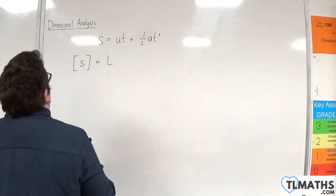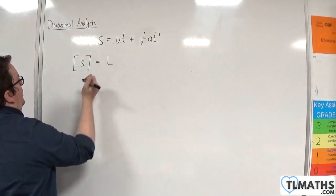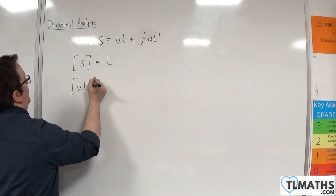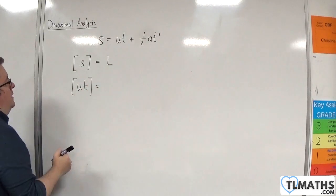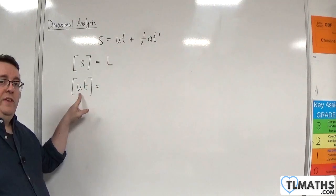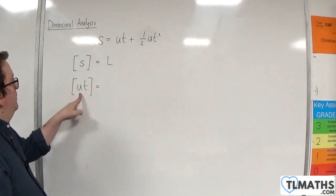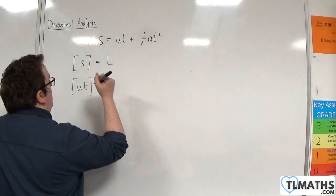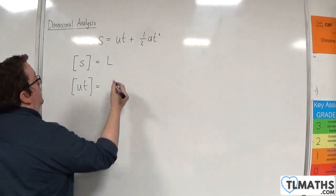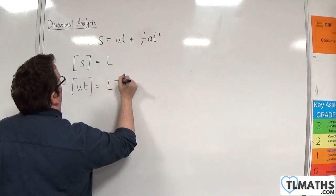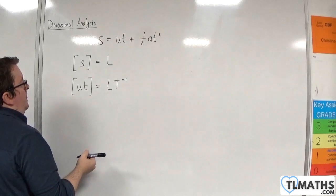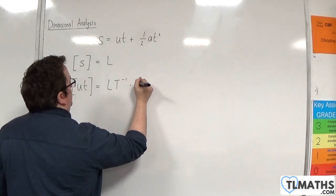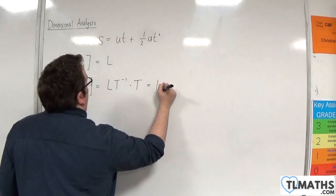On the right-hand side, we have U times T. So let's look at the dimensions of U times T. Now, U was the initial velocity. A velocity is measured in metres per second, so length times time to the minus 1. And then you've got time, which of course is just T, and so that is equal to L.